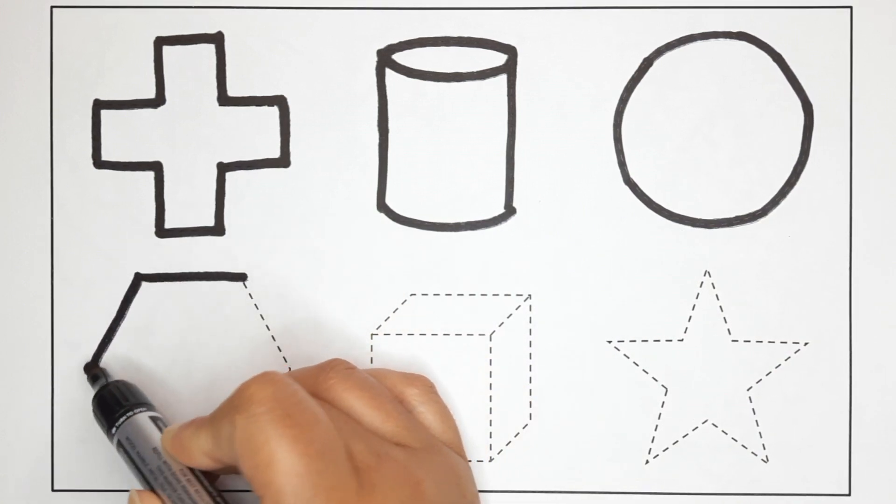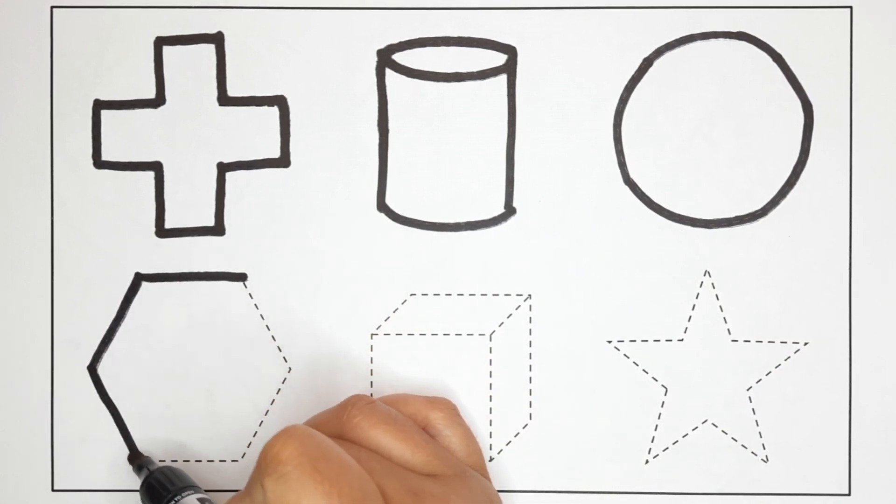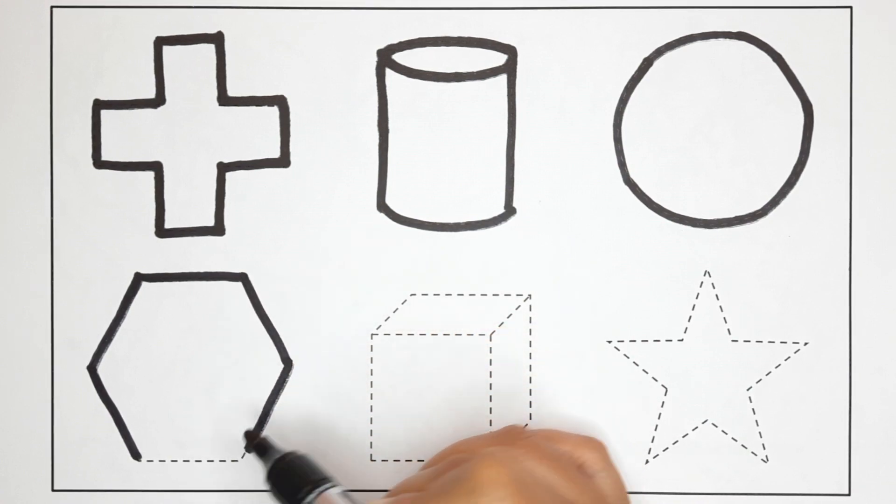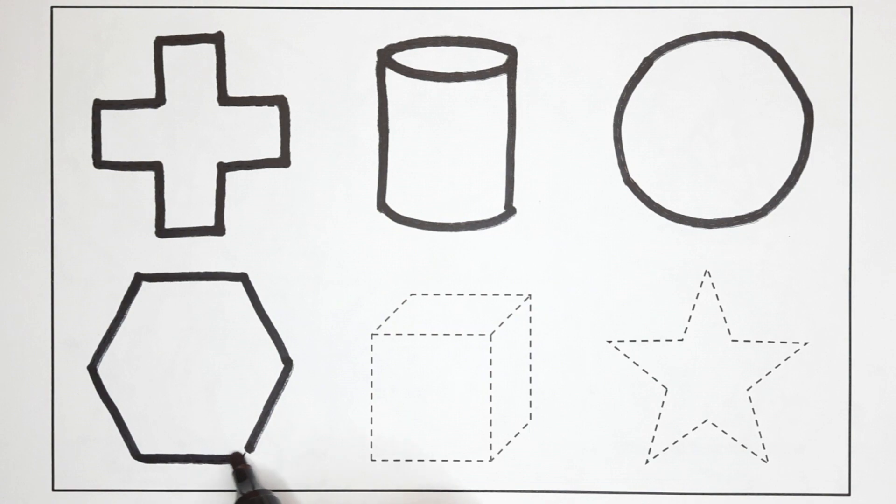What is this? It's a circle. Hexagon. It's a hexagon. This is a hexagon.